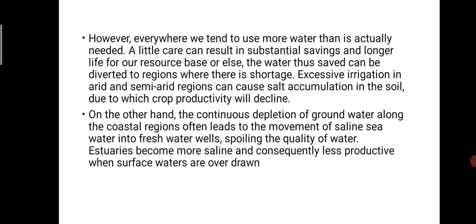On the other hand, depletion of water along coastal regions often leads to the movement of saline seawater into freshwater, spoiling water quality. Estuaries become more saline and consequently less productive. When surface water is overdrawn, groundwater comes in to fill that surface area, due to which the salinity of water increases and saline conditions worsen.